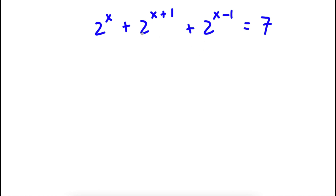Alright, so I have 2 to the power of x, plus 2 to the power of x plus 1, plus 2 to the power of x minus 1, is equal to 7.